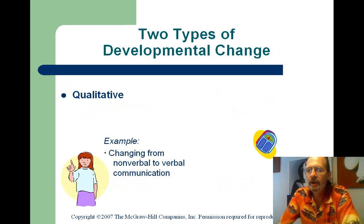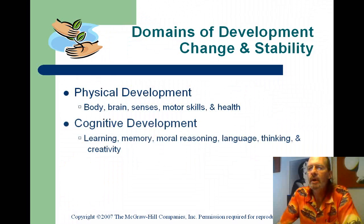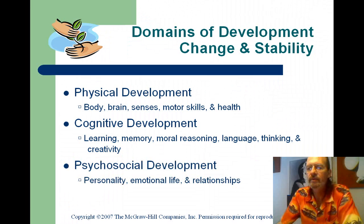There are two types of developmental change: qualitative, which is a change in kind or structure; and quantitative, which has to do with things we can count — numbers or amounts. We look at physical development, cognitive or thought development, and psychosocial development — the person and that person's place in society and relationships.